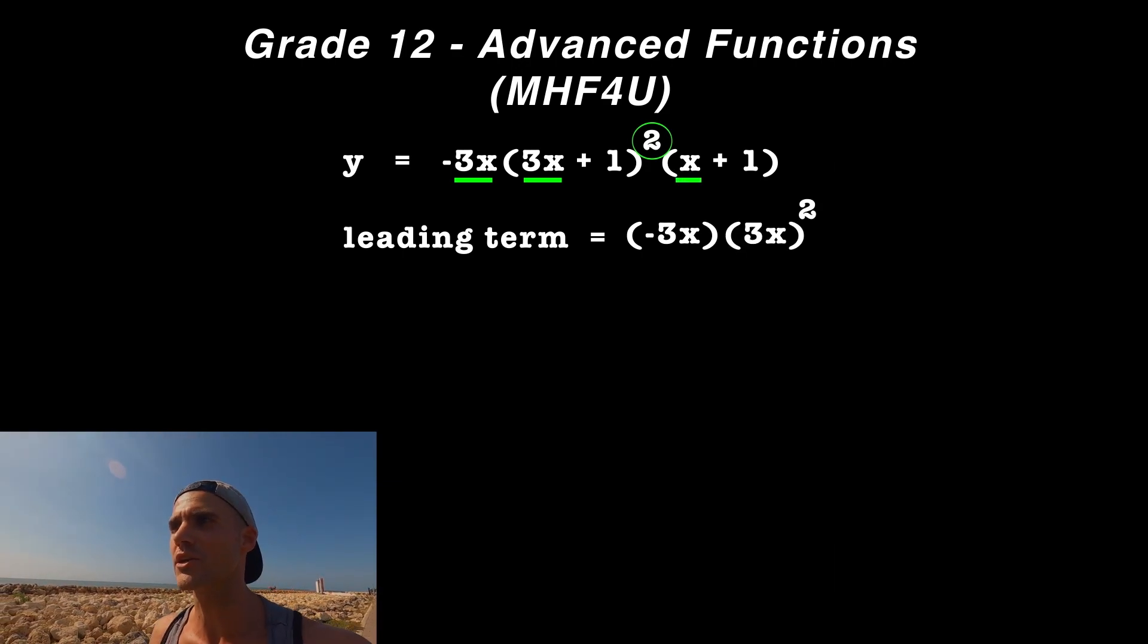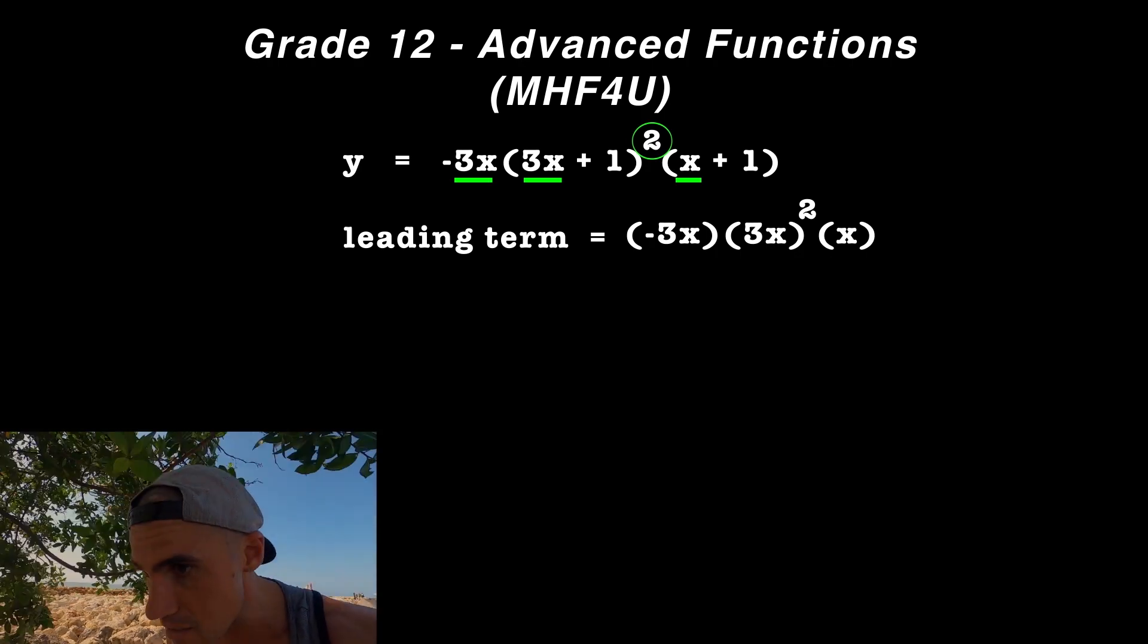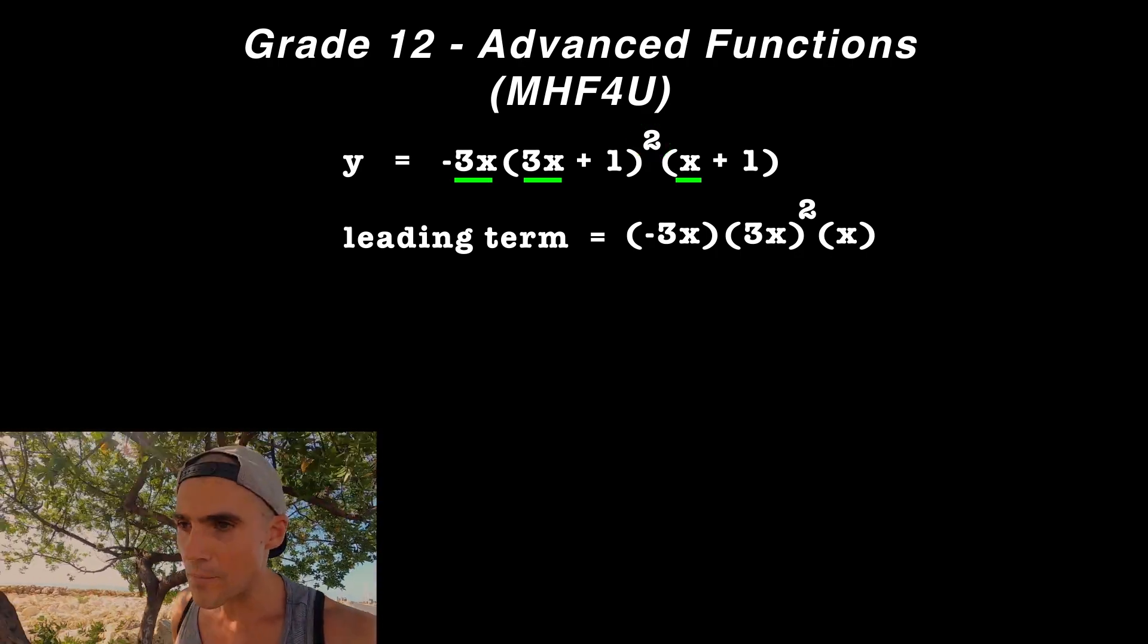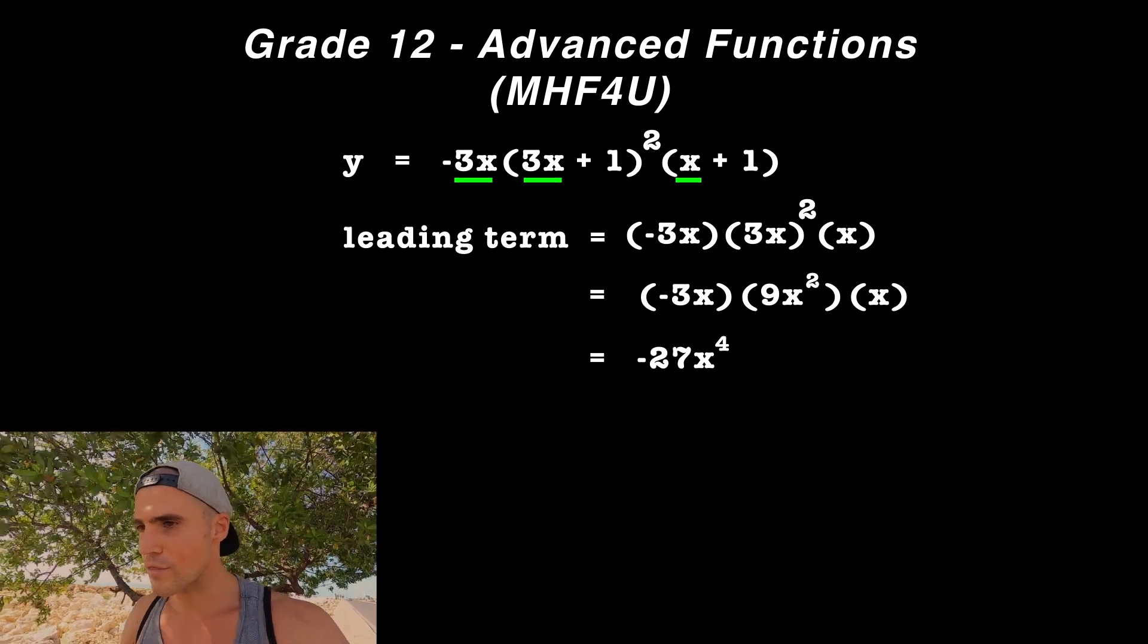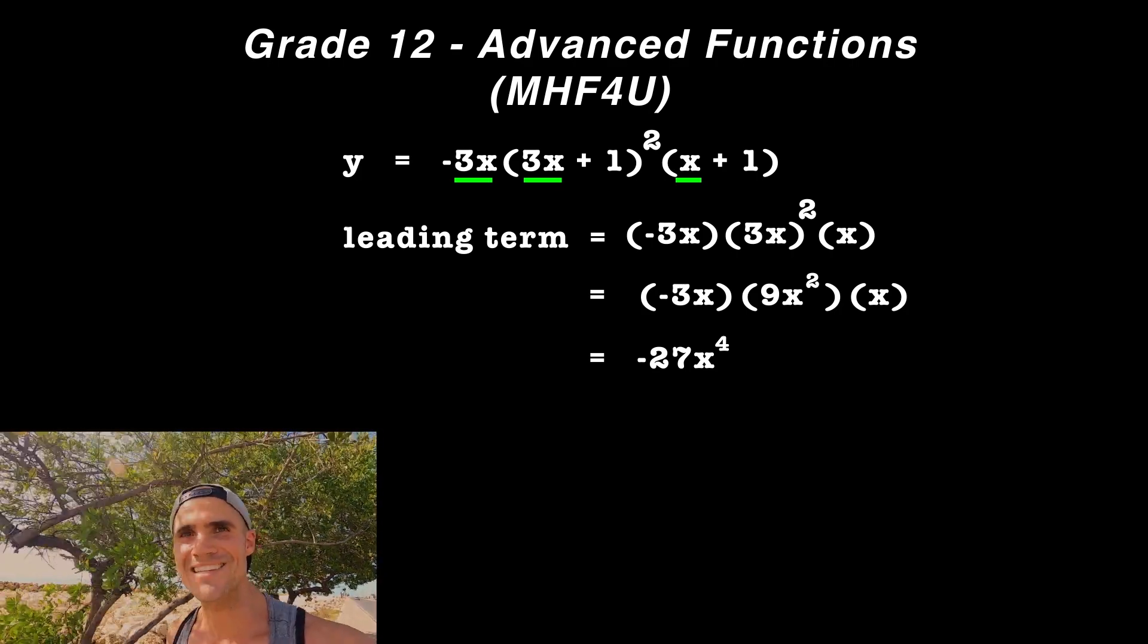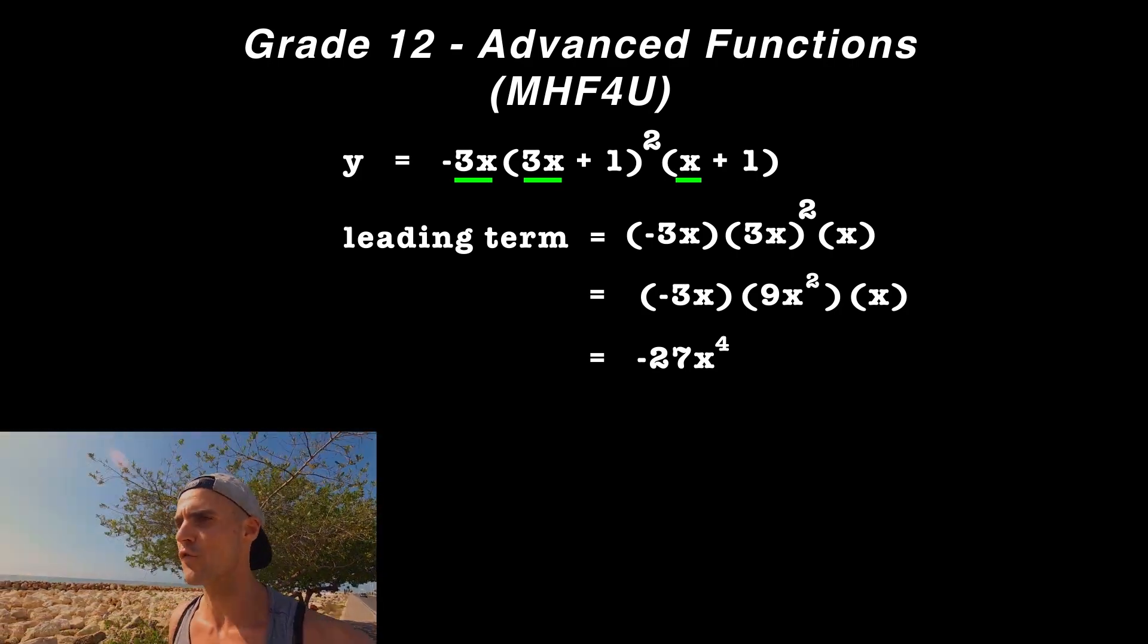When we multiply all these out, we get a leading term of -27x⁴. In this case, the degree is 4, which is even, and the leading coefficient is negative, -27.